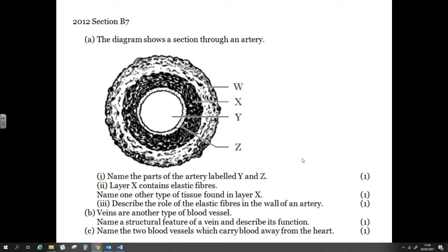Name the blood vessels which carry blood away from the heart. Those are the arteries. Specifically, the aorta is the blood vessel. Two blood vessels which carry away from the heart. So you can have the coronary arteries, which, to be fair, branch off the aorta and come back to the heart. Or you can have the aorta.